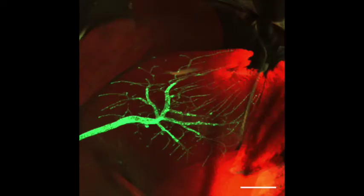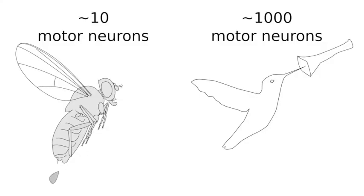Remarkably, each direct flight muscle is activated by only one neuron each. Thus, the fly basically uses only 12 knobs to control the complex three-dimensional path of its wing.